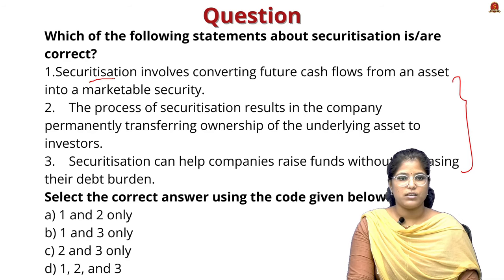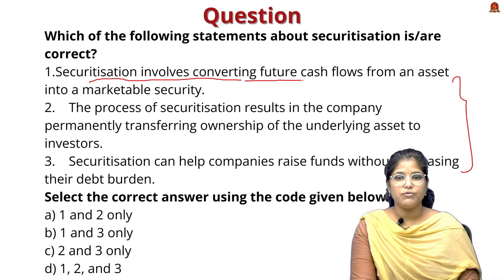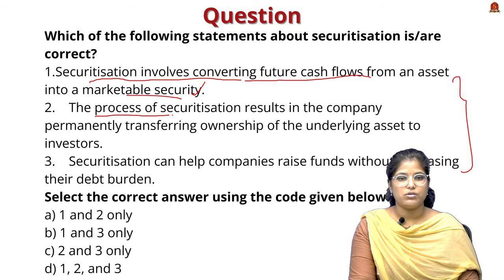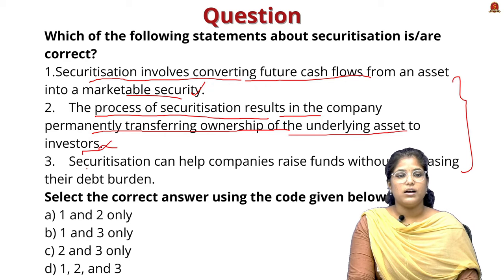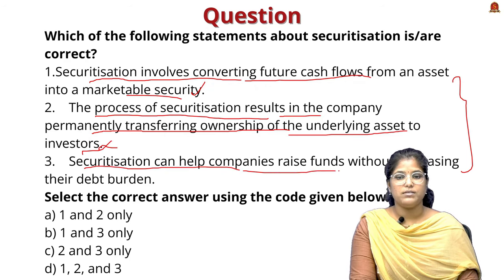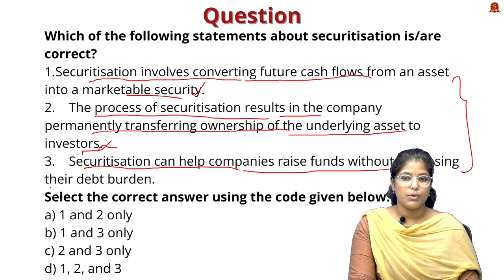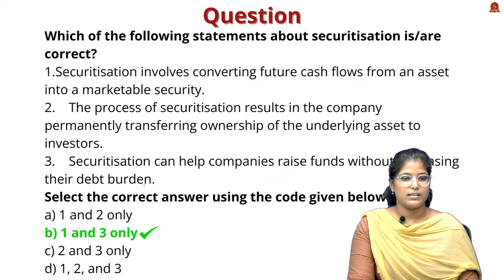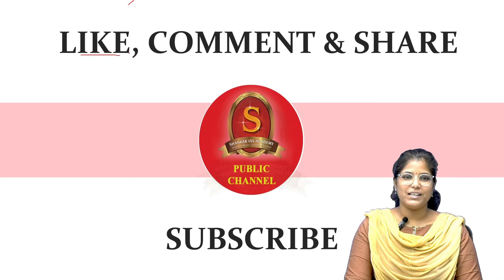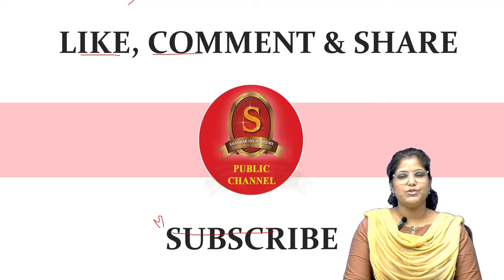The practice question gives three statements about securitization: first, it involves converting future cash flows into a marketable security; second, it results in permanent transfer of ownership of the underlying asset to investors; third, it can help companies raise funds without increasing their debt burden. The correct answer is option B — statements one and three are correct. If you liked the video, please hit like, comment, and subscribe to Shankarai's Academy.